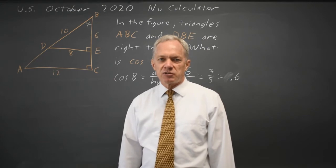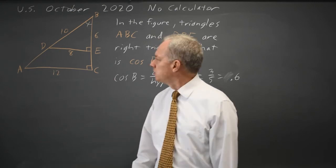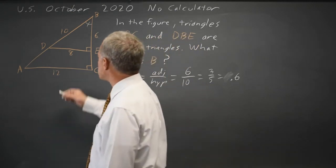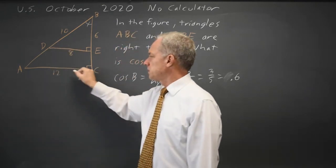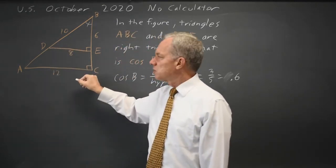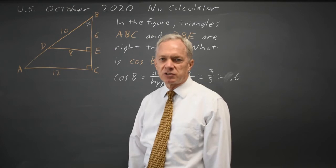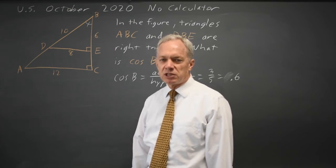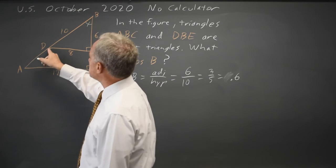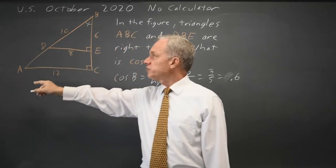We could also do a lot of other geometry here if they were asking different questions. Since DE is 8 and AC is 12, the large triangle is in the ratio 12 to 8 or 3 to 2 relative to the small triangle, so since BD is 10, AB is 15.